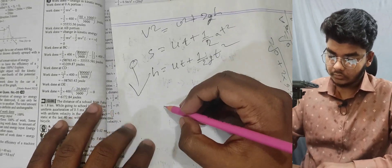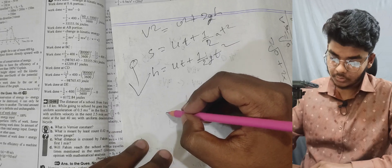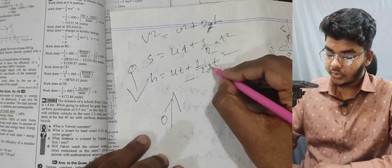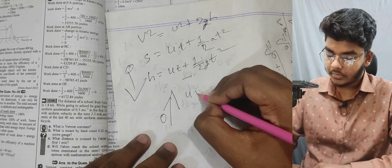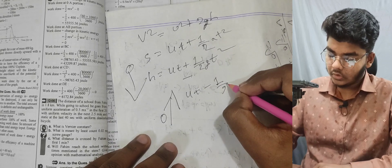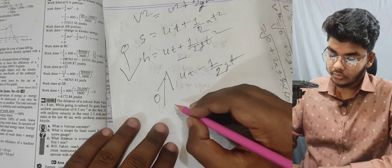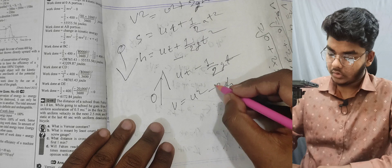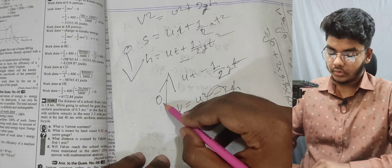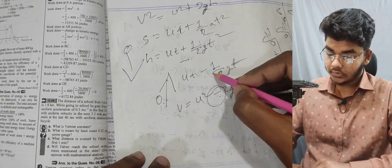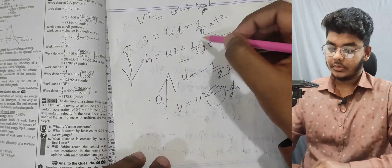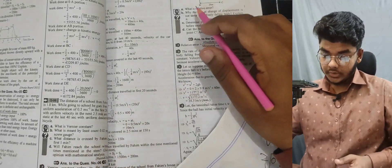When a cricket player throws the ball upwards, acceleration due to gravity acts against the motion, so it becomes ut - ½gt². Similarly, v² = u² - 2gh when moving against gravity.